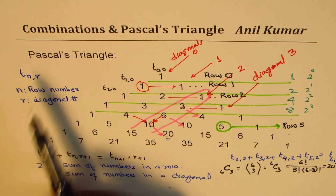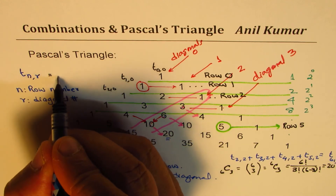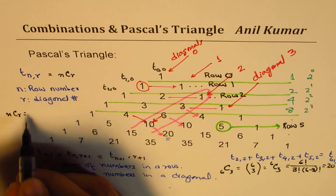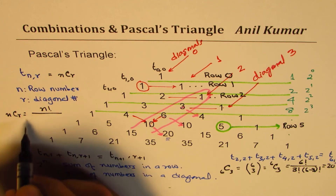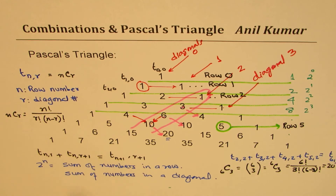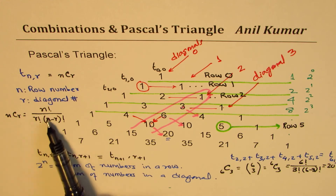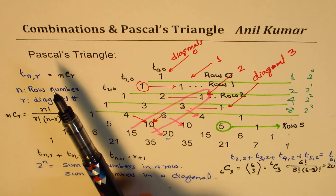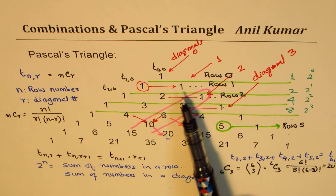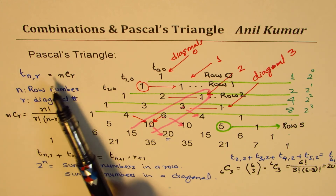Every term T(n,r) can be written as nCr, where nCr = n! / (r! × (n−r)!). And n! means n × (n−1) × (n−2) and so on. In this video, what we have learned is that there's a strong correlation between Pascal's triangle and combinations — every term is equivalent to nCr, so T(n,r) = nCr.